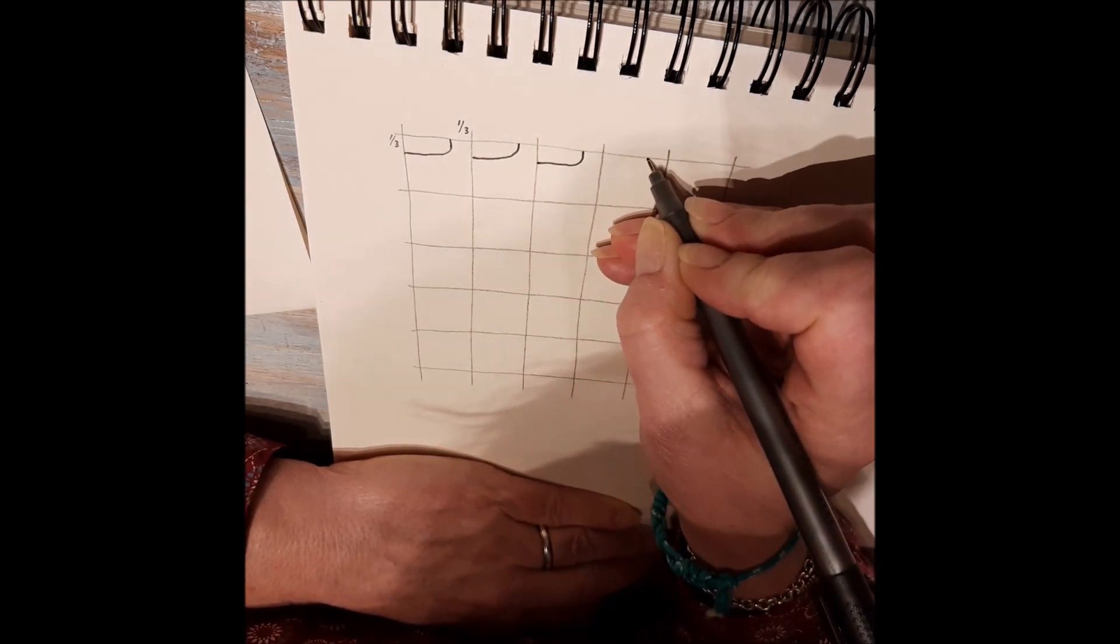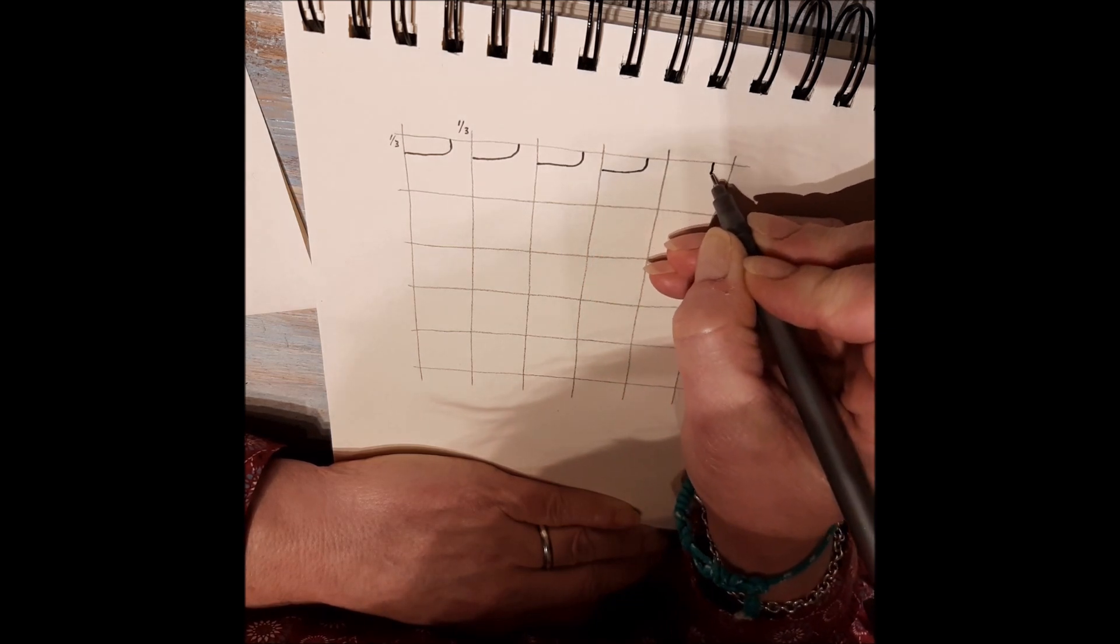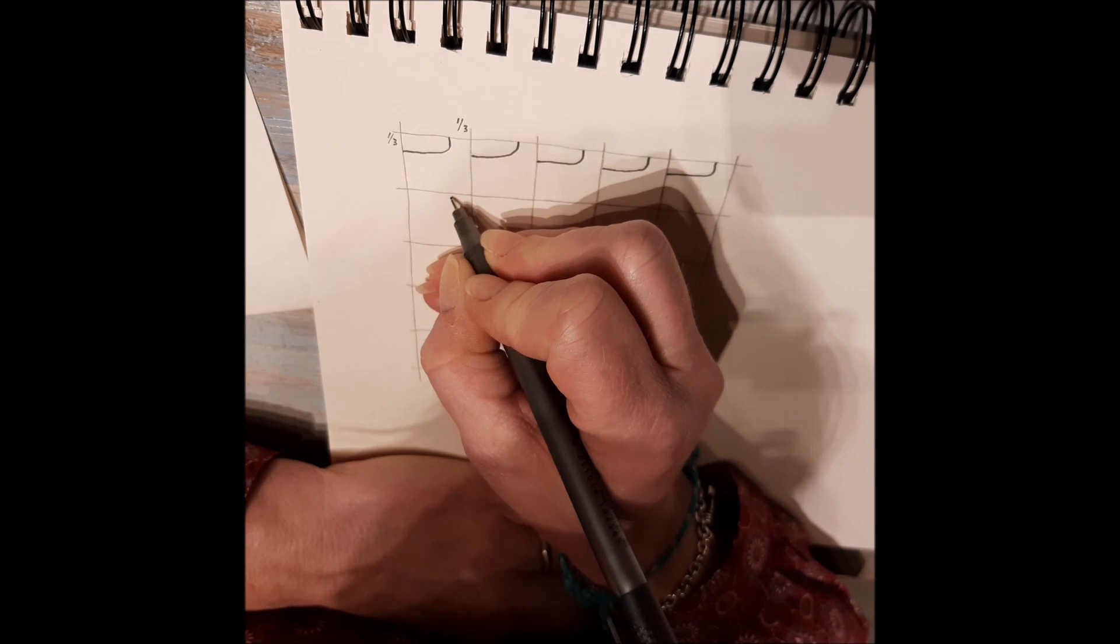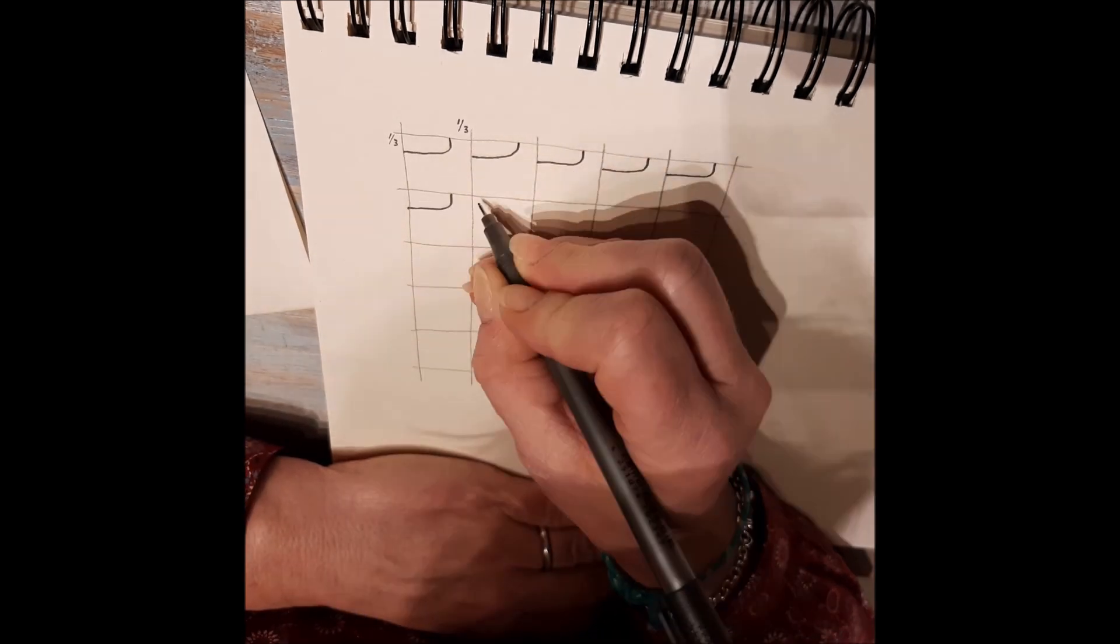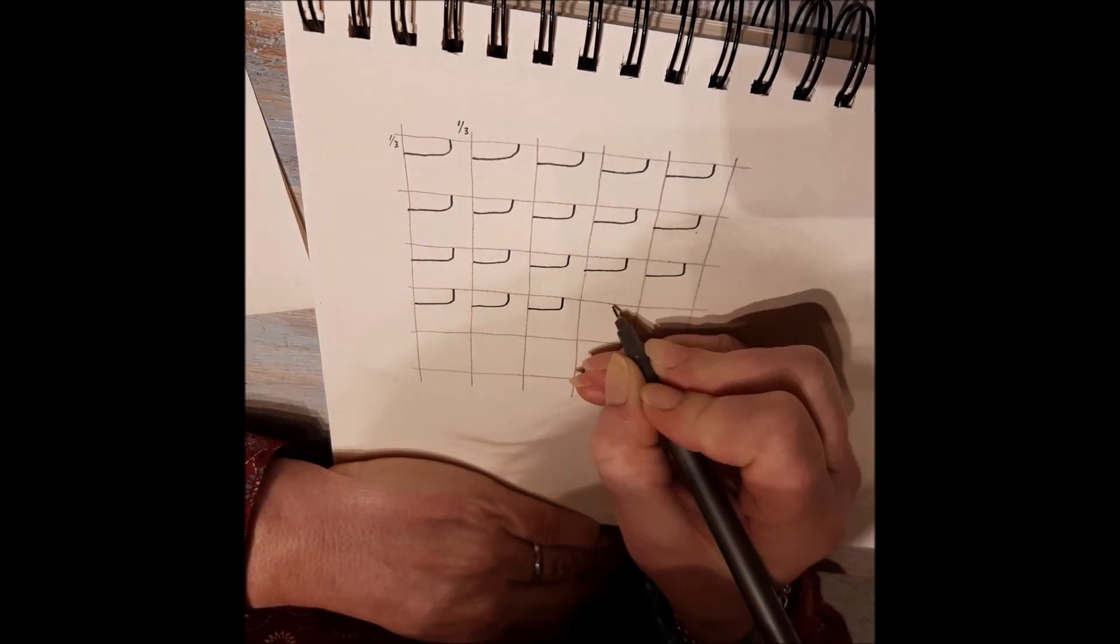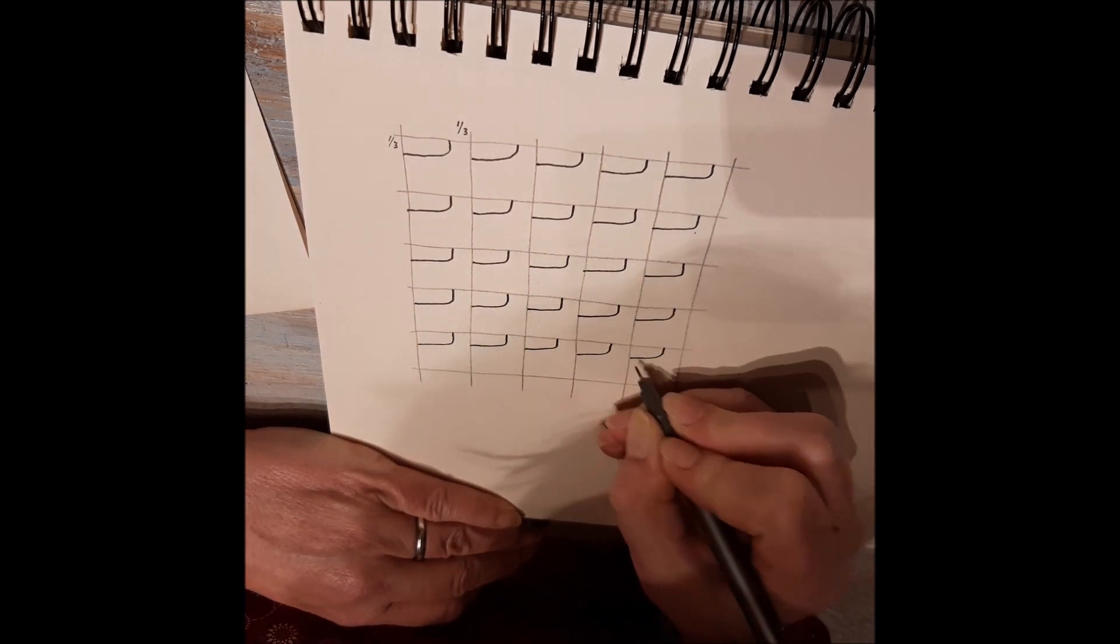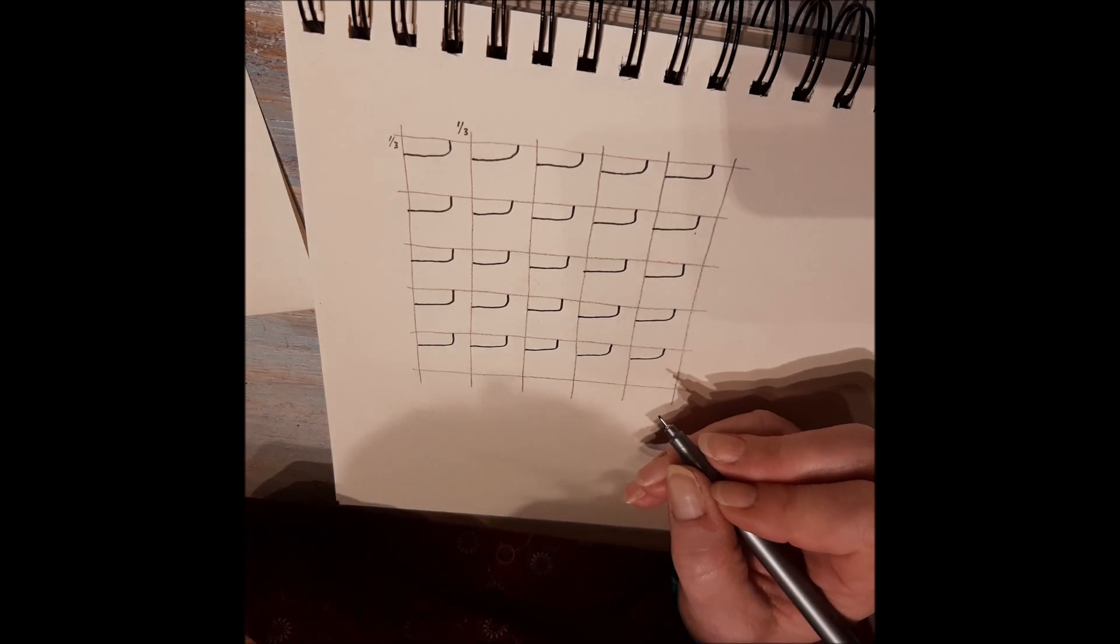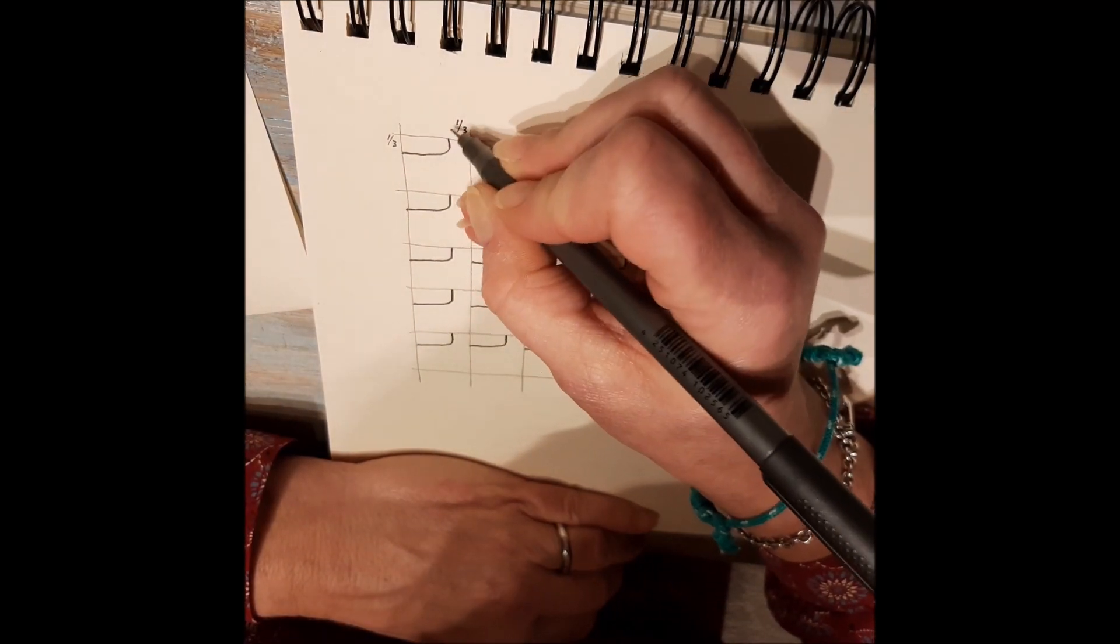One-third, one-third, one-third. And the same in the other boxes, which is nicely lined out.